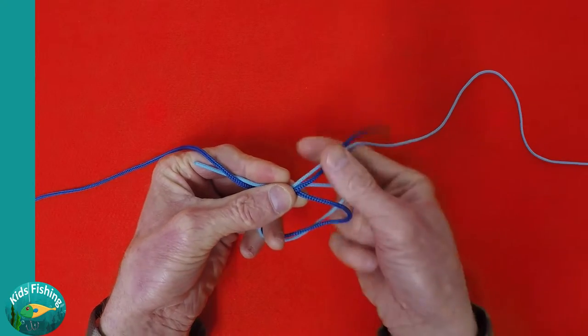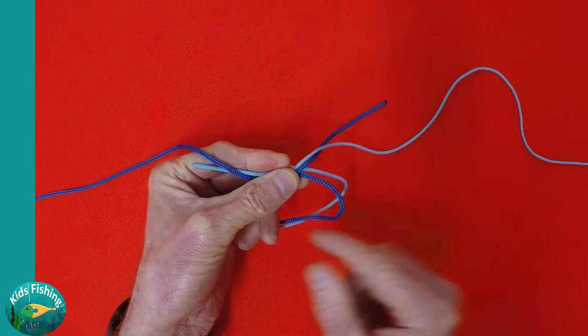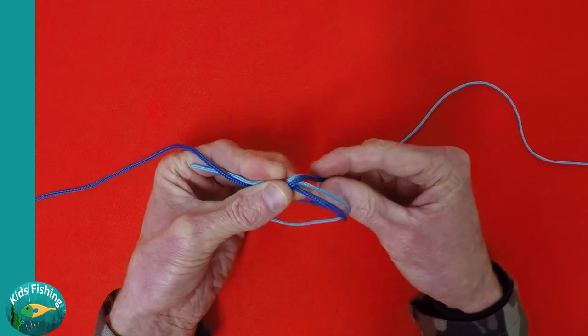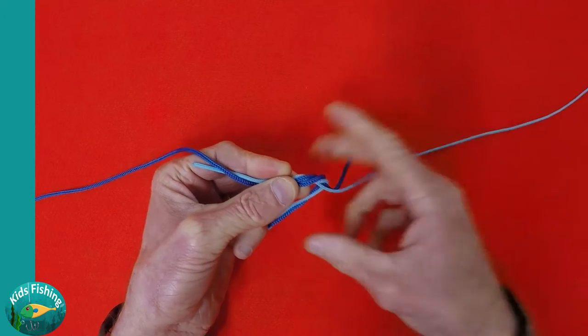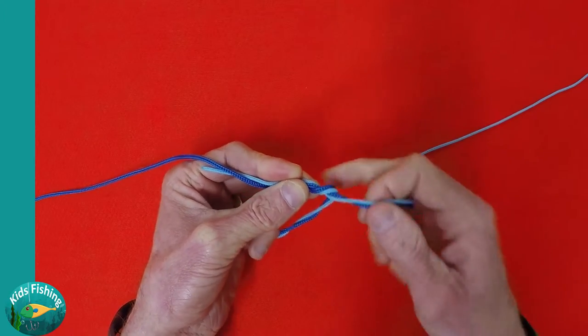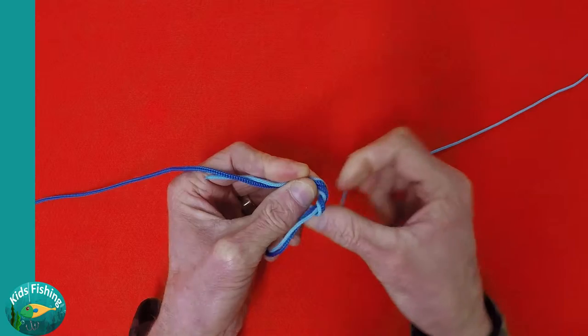The next step is that we are going to wrap the leader through the line like this, and we pull through the main line at the same time. So we're going to wrap it through.